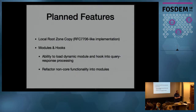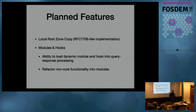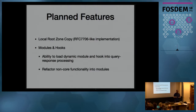Some planned features for development this year: a local root zone copy — an RFC 7706-like implementation sponsored by ICANN. We also plan to add a modules and hooks interface in BIND. This will allow you to load your own dynamic module into the query response processing and modify the data sent to the client. It will also allow ISC to refactor some non-core functionality into modules, making the BIND core lighter and easier to maintain.